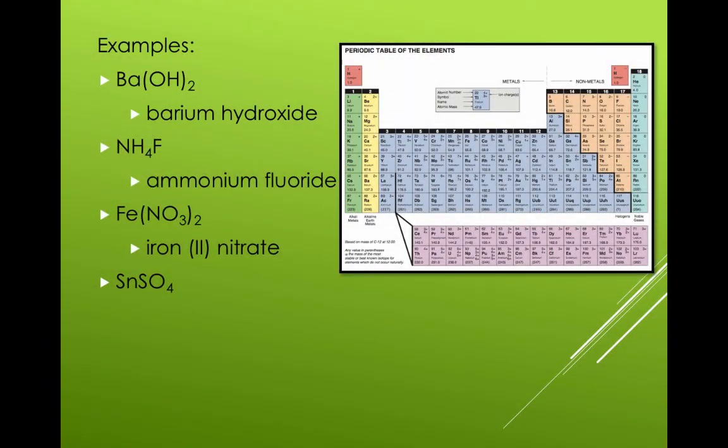SnSO4. There is no brackets around the SO4 because there is only one set of SO4. However, if you like, you can add them. This makes Sn bracket SO4 bracket 1. Reversing the crisscross, we get Sn with a plus 1 charge and sulfate gets a minus 1 charge.